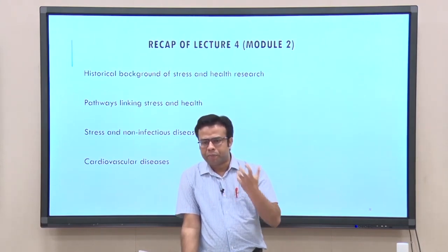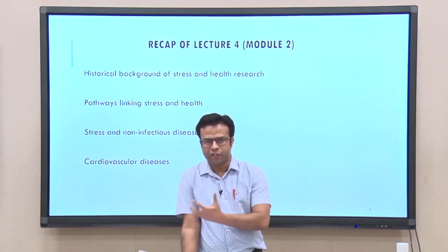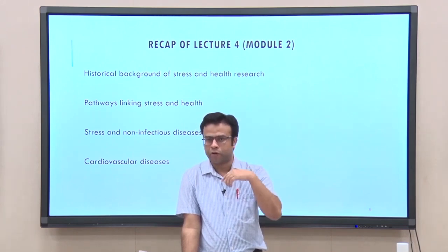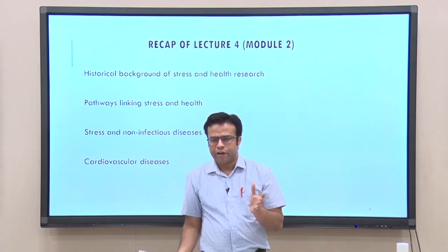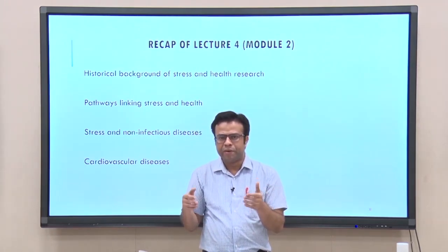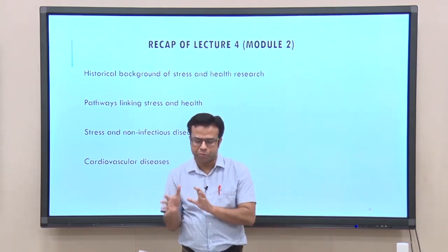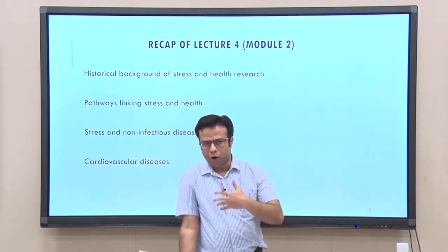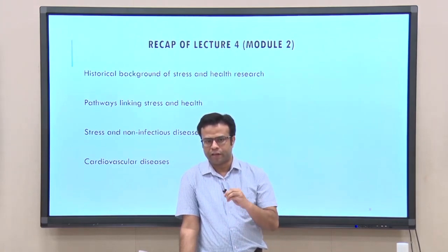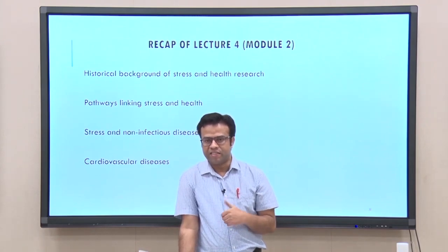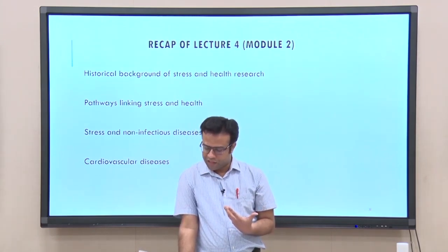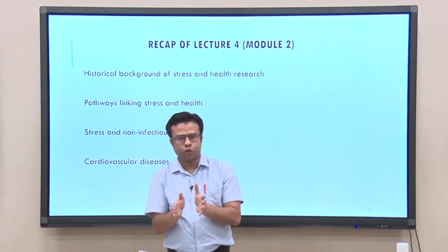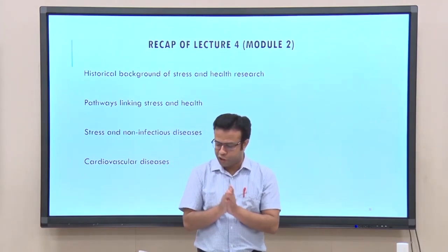We also discussed Type A and Type B personality types, which are connected to heart disease. Type A people are typically highly competitive, achievement-oriented, have time urgency, and may have suppressed anger and hostility. Type B people are the opposite — easy-going and relaxed. Because of these characteristics, Type A people are more likely to experience stress, and research shows they are more vulnerable to stress-related diseases such as heart disease. Today we will talk about stress and infectious diseases.